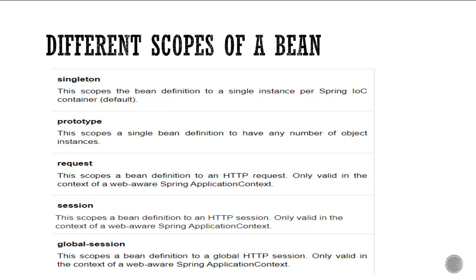Next question: Different scopes of a bean in Spring. There are five scopes: Singleton, Prototype, Request, Session, and Global Session. Singleton is the default scope. Prototype means a new object is returned each time it is requested. Request is one bean per HTTP request. Session is one bean per HTTP session. Global Session scopes a bean to a global HTTP session, valid only in a web-aware Spring application context — though to be honest, I haven't worked with Global Session.